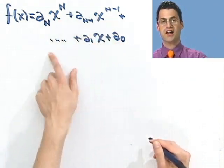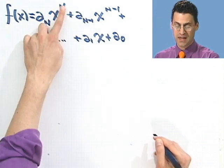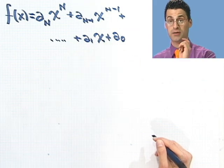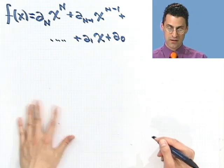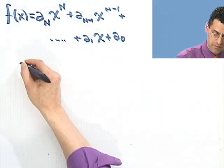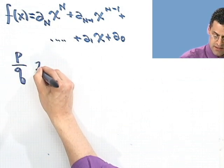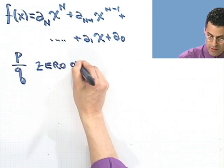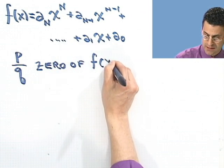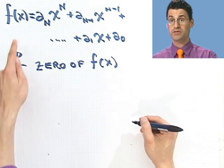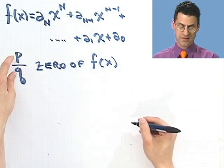It goes on for a while until finally I get to a₁ times x plus a₀. So there's a generic polynomial: has a coefficient times x to the n plus some other coefficient x to the n minus 1, all the way down to something times x plus a number. It turns out that a rational number, so a fraction, p over q is going to be a zero of f of x. And this is in lowest terms, so I'm assuming you've already canceled away all the terms.